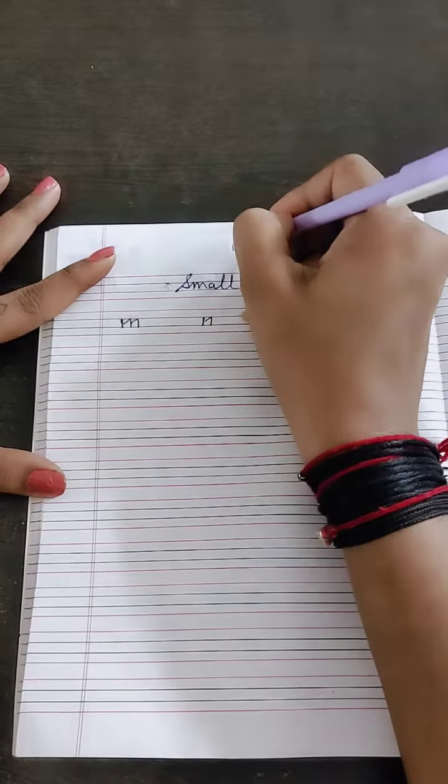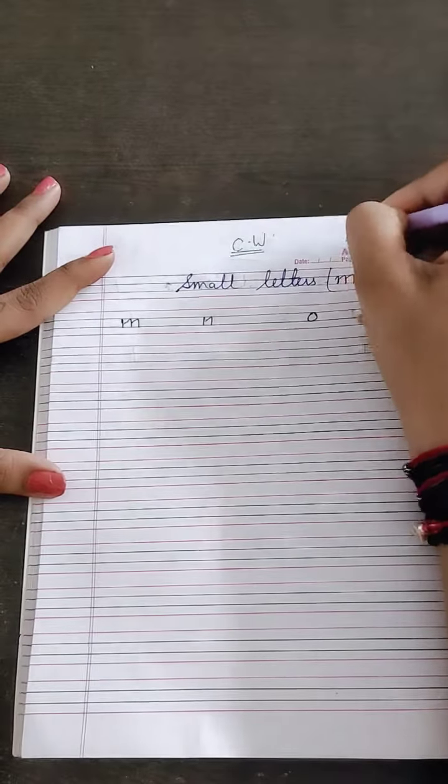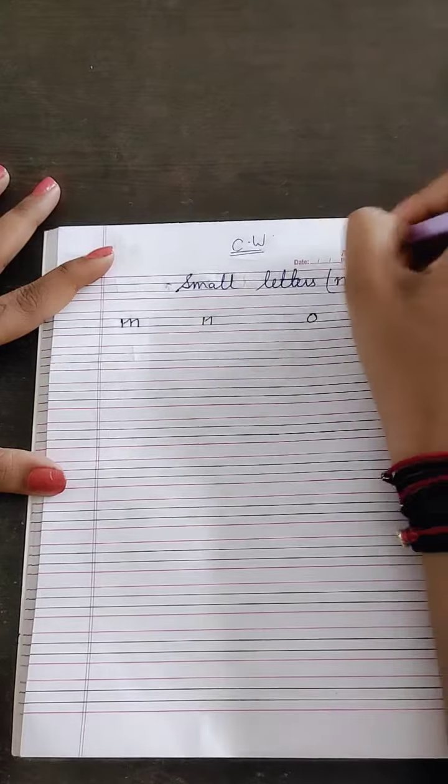So first you have to write CW over here. Then mention the date, month and year.